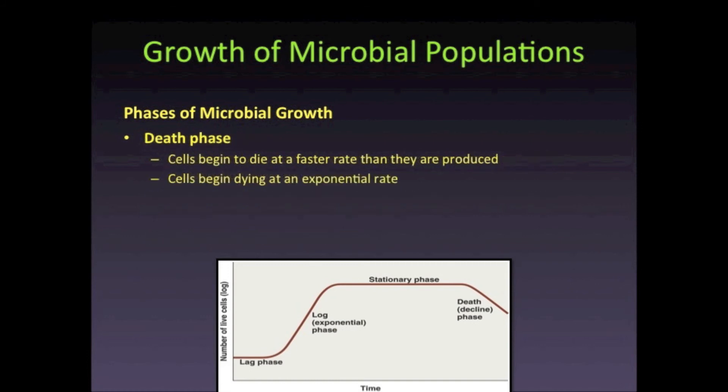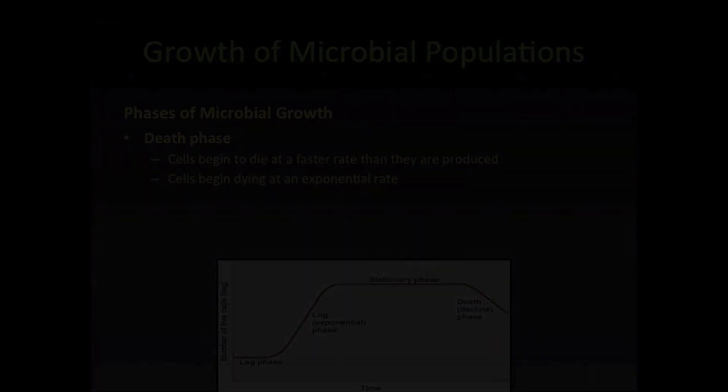As we move into the next phase of the growth curve, the majority of the nutrients have been depleted and waste products have further accumulated. The number of dying cells begins to exceed the number of new cells, and in some cases all of the bacterial cells die. However, some bacterial species are capable of forming endospores, which are dormant resistant forms that may be revived when nutrients are available.